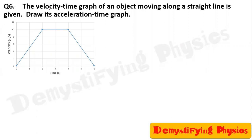Question number 6. This is important. The velocity-time graph of an object moving along a straight line is given. Draw its acceleration-time graph.